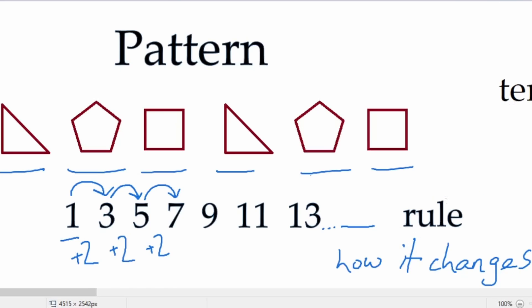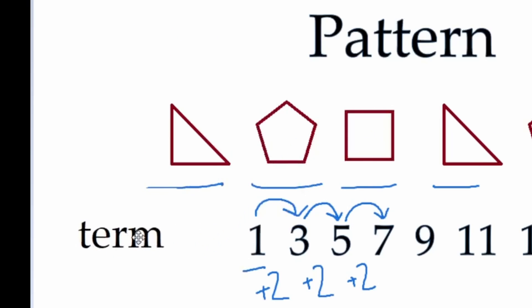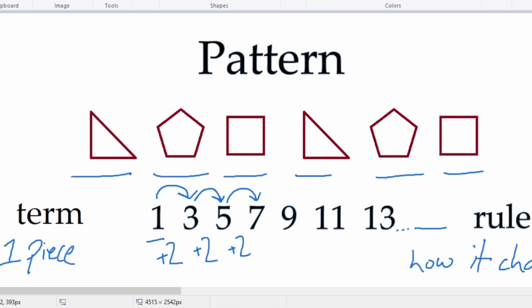One more word to know for patterns is the word term. As fancy as this word looks, it simply means one piece in a pattern. This is a term by itself. This is a term by itself. Any of those numbers by themselves are terms. So a term is one piece in a pattern. And the rule is how it changes each time. If that makes sense, let's continue.